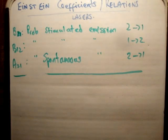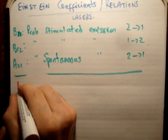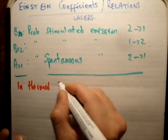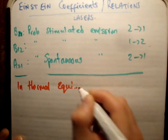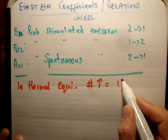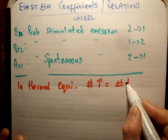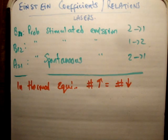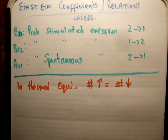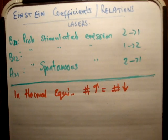In thermal equilibrium, the number of upward transitions is equal to the number of downward transitions. That should be a natural thing to think, and I'm telling you that it is the truth, so just accept that and we shall move on from there.